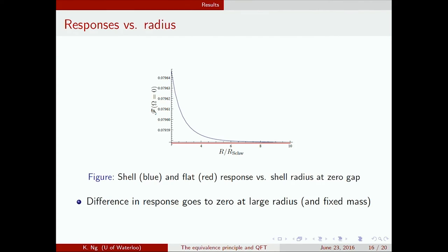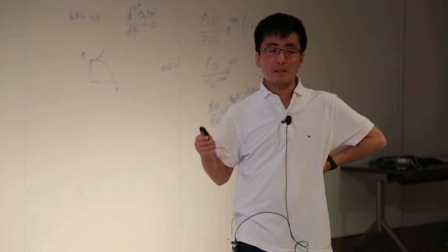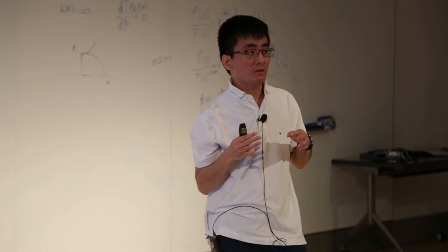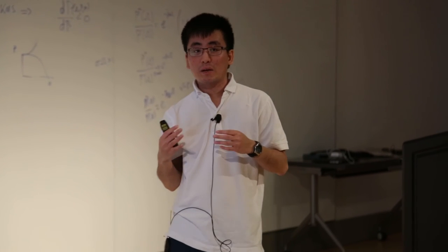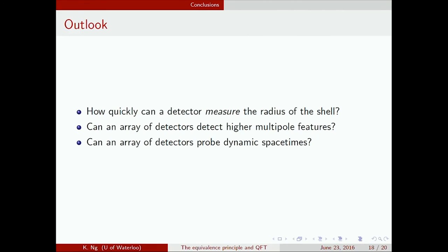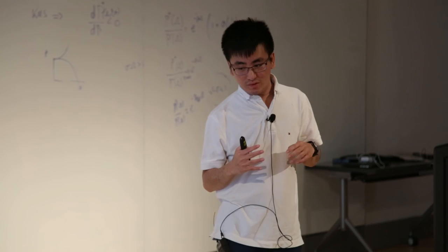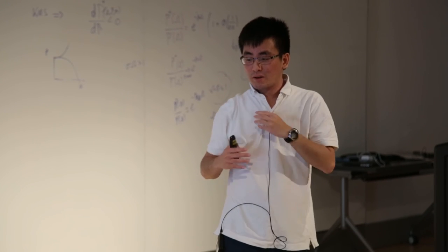So in conclusion, a detector can extract information about the global structure of space-time even when switched on for scales much shorter than the characteristic scale of the global structure. Or one could put it another way: the local quantum vacuum seems to contain information about space-time. There are a couple steps we could take in the future. For example, we could try to optimize things and ask how quickly can a detector measure this shell? We can ask how an array of detectors can detect higher multipole features. Finally, we can ask if an array of detectors can probe a changing space-time.